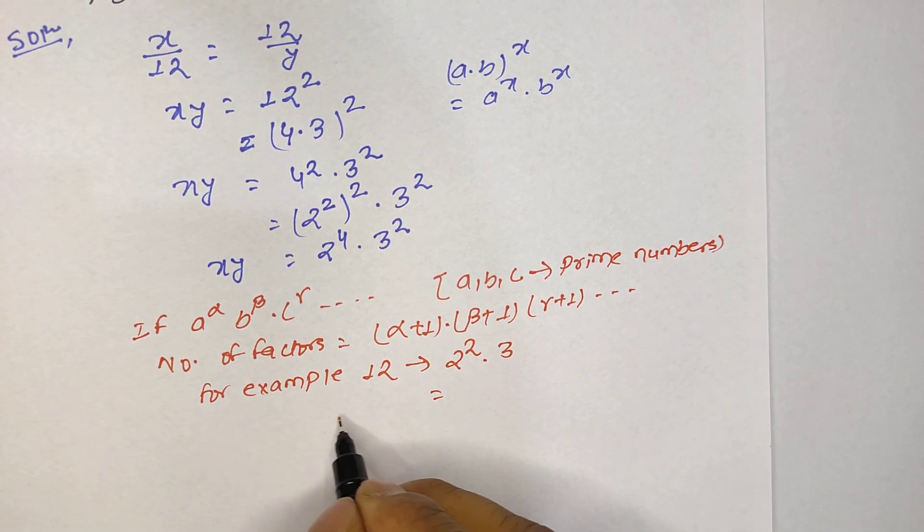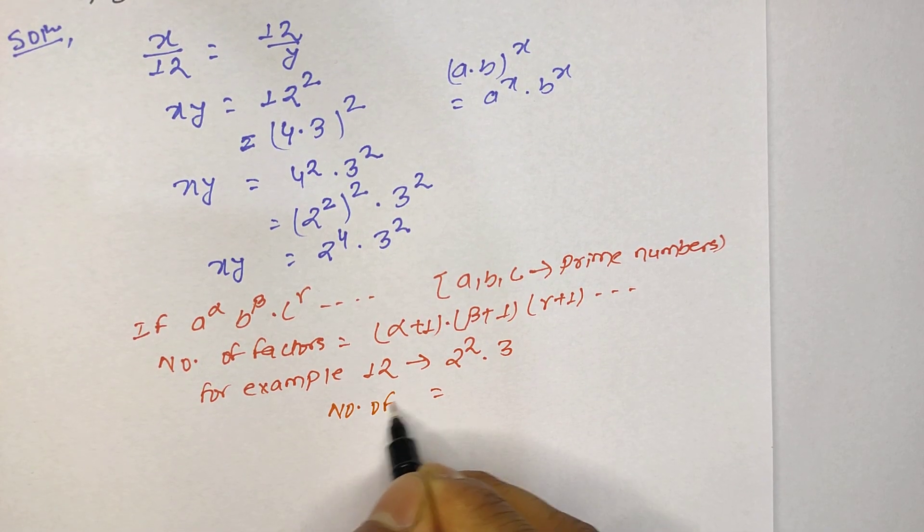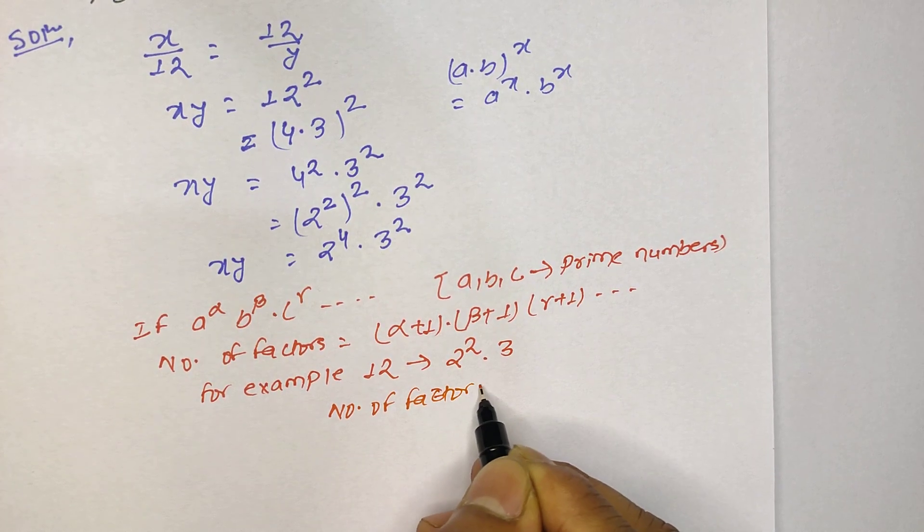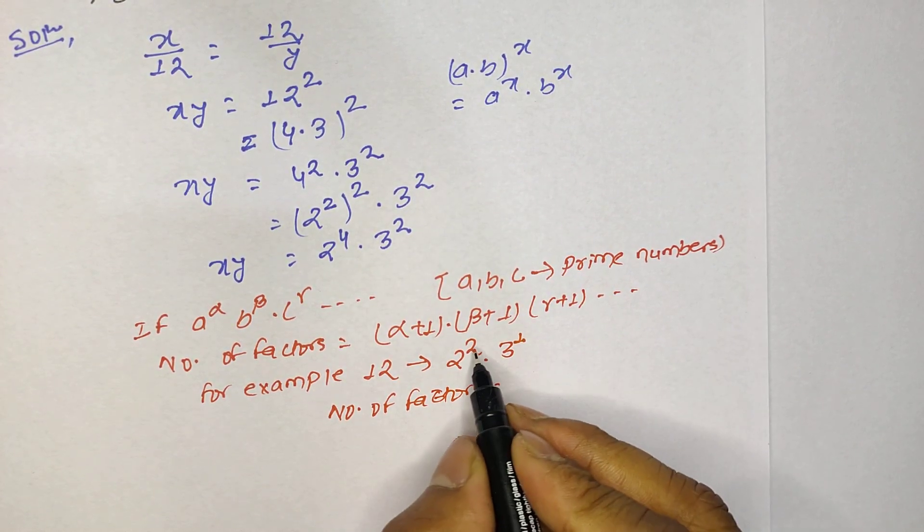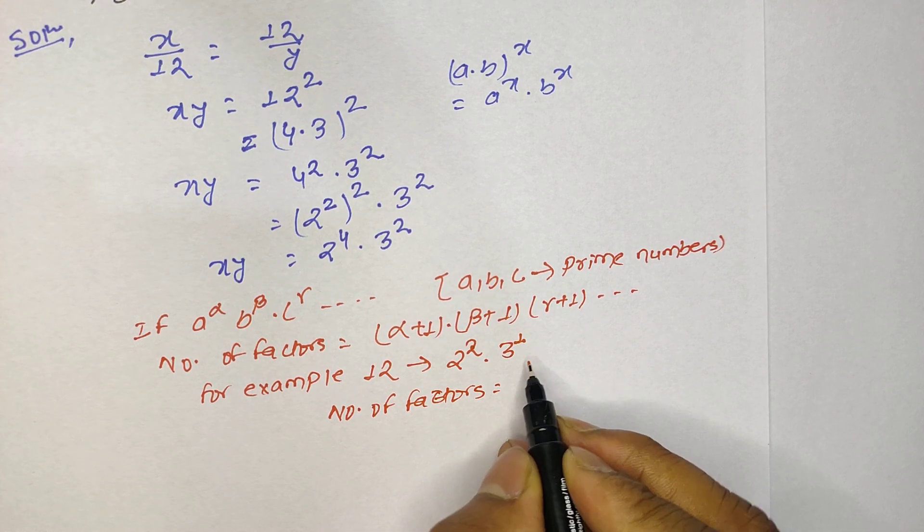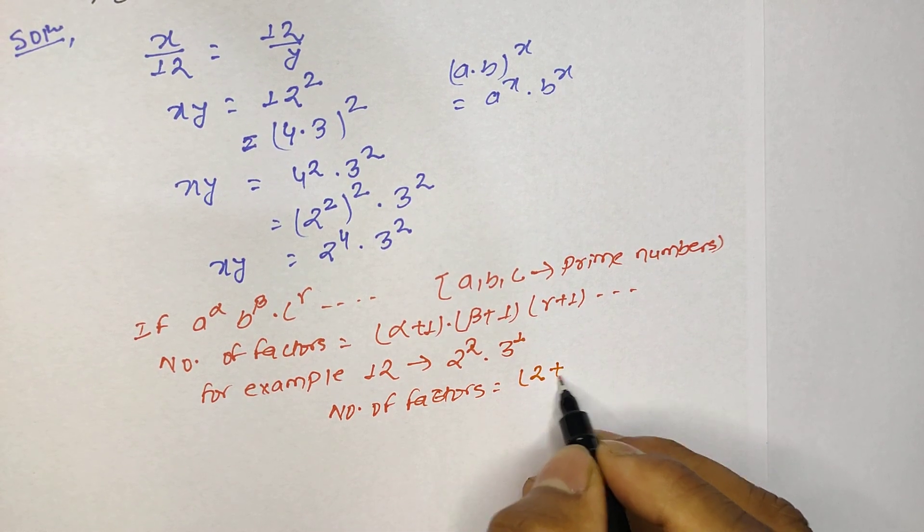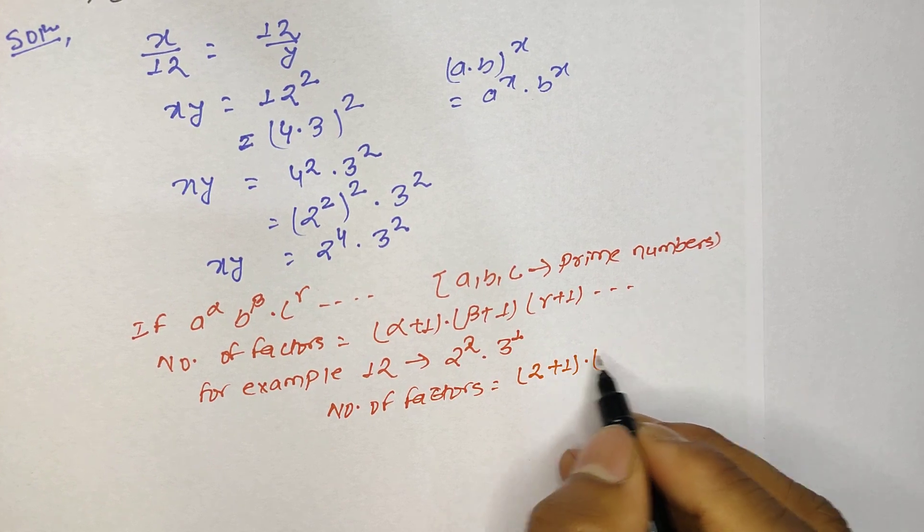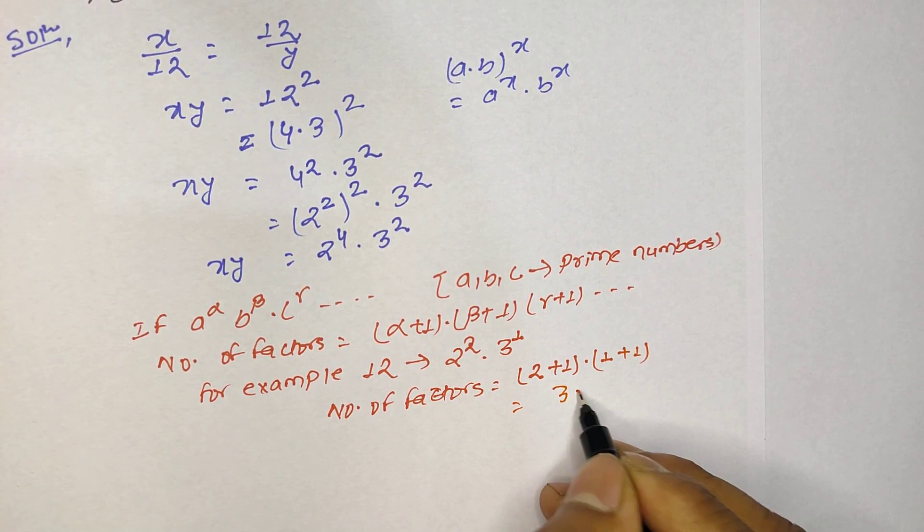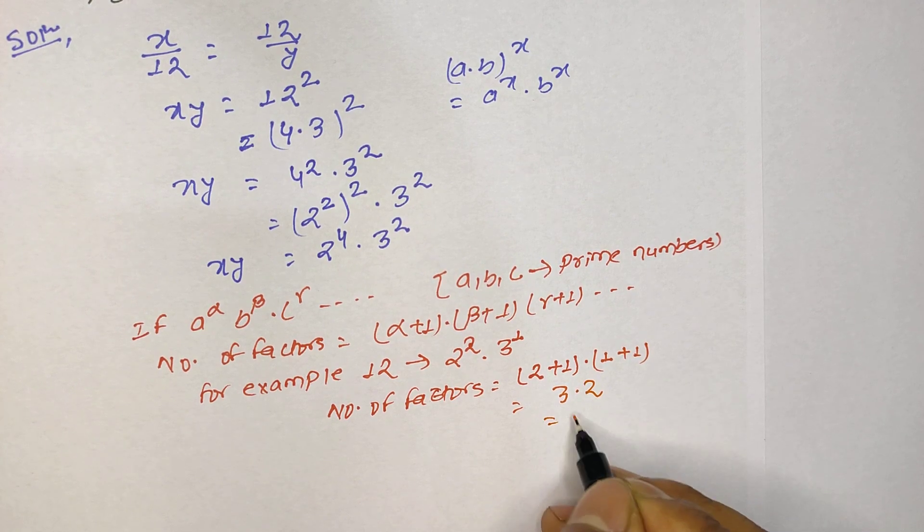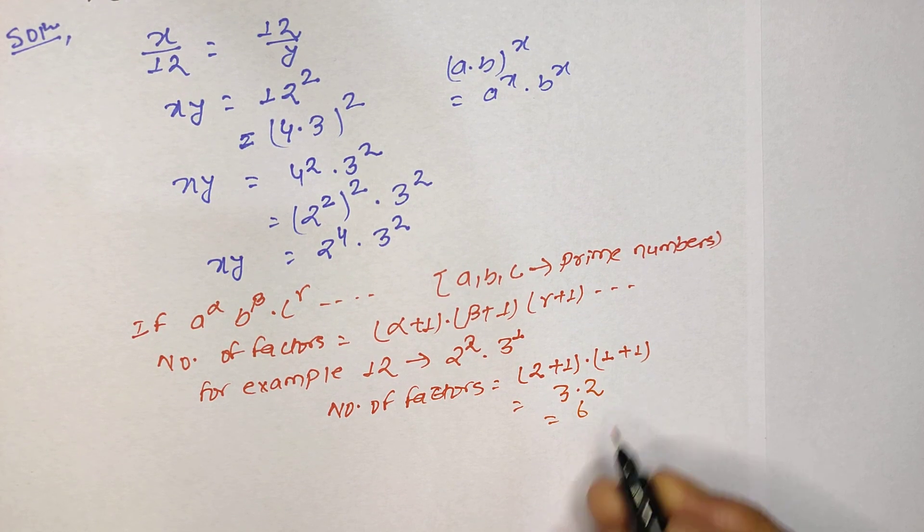So number of factors equals alpha plus 1. As you know that 3 has the power of 1, so our alpha is 2 and beta is 1. So alpha plus 1 times beta plus 1: 2 plus 1 is 3 and 1 plus 1 is 2, so 3 times 2 is 6.